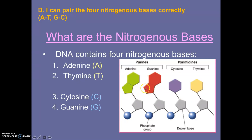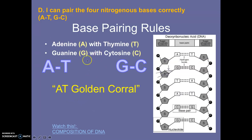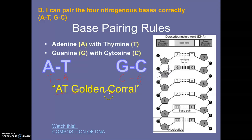How are the bases going to pair together? There's a rule you have to remember: A will pair with T, or adenine pairs with thymine. Then guanine will pair with cytosine. If you have a T, you're going to pair with A. And if you have a C, you're going to pair it with a G. So A pairs with T, and G pairs with C. To remember this, you can use 'at Golden Corral' — A with T, and G with C. Another one is 'apple in the tree, car in the garage.'